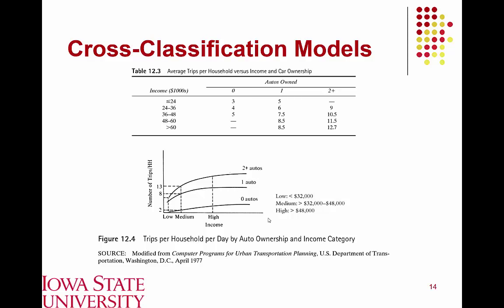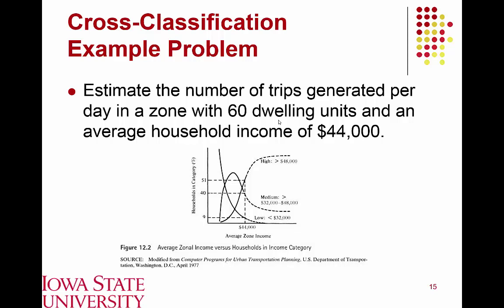Once the population is broken into groups based on auto ownership and income, different trip rates apply to each classification. Households with no automobiles and low income tend to make the fewest trips, while the highest-income households with the most automobiles make the most. These cross-classification figures were developed as part of a USDOT study conducted in the 1970s, and can be used to work through example problems.